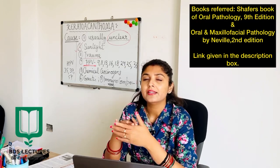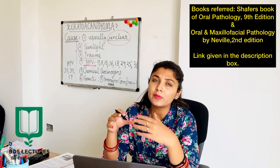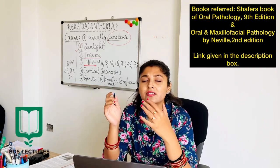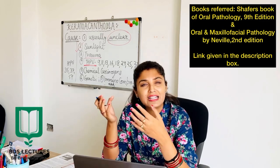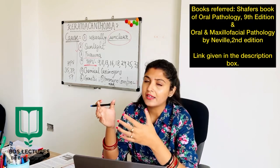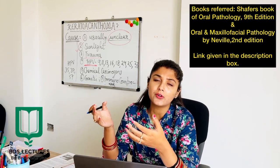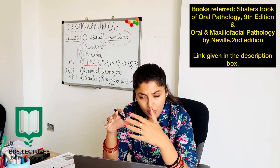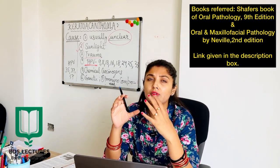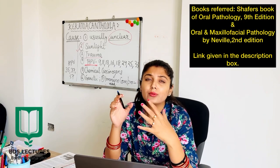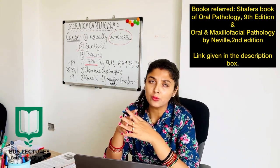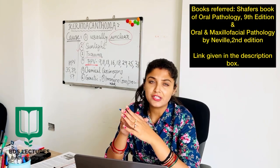Certain strains of human papillomavirus have also been reported as a cause of keratoacanthoma. The HPV strains noted are 11, 13, 16, 18, 25, 33, 37, and 57. Apart from these, genetic factors and an immunocompromised state of the individual are also contributing reasons. Finally, trauma can also be one of the causes of keratoacanthoma.